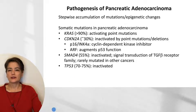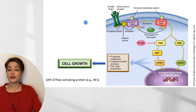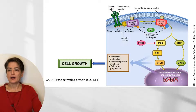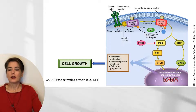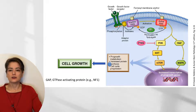A quick review of KRAS: normally, growth factor binding activates RAS to initiate signal transduction. An activating point mutation knocks out GTPase activity, making RAS constitutively active and no longer dependent on growth factors. This continuously drives signaling pathways, resulting in transcription of pro-growth genes and cell proliferation.